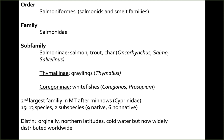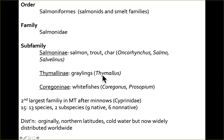The family is Salmonidae. The subfamily endings: 'idae' is the family ending, 'inae' is the subfamily ending. We have three subfamilies: Salmoninae, which includes salmon, trout, and char, with genera Oncorhynchus, Salmo, and Salvelinus. Then Thymallinae, which are the graylings, in genus Thymallus. And the final subfamily is Coregoninae, which are our whitefishes, in the genus Coregonus or Prosopium.